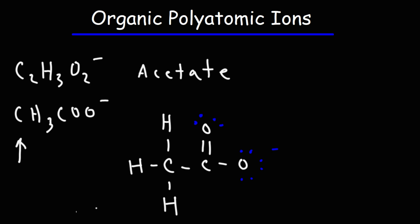If you want to calculate the charge on an atom in a structure like this, you could use the formal charge equation, which is equal to valence electrons minus the number of bonds and dots.